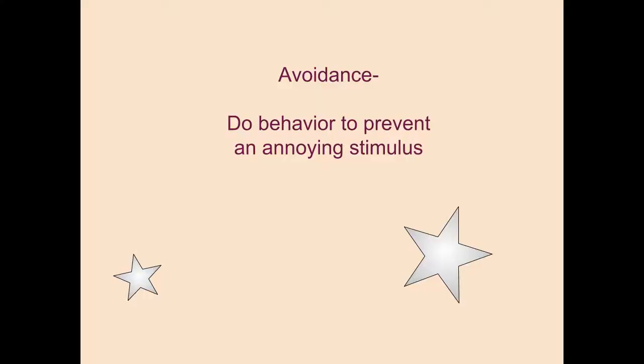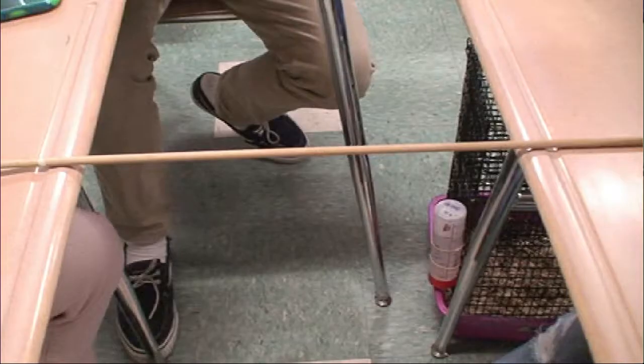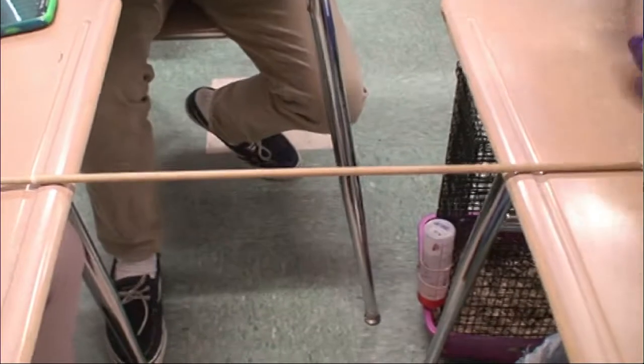Avoidance is doing a behavior to prevent an annoyance. An example is Piper going across the dowel to avoid us pushing her.